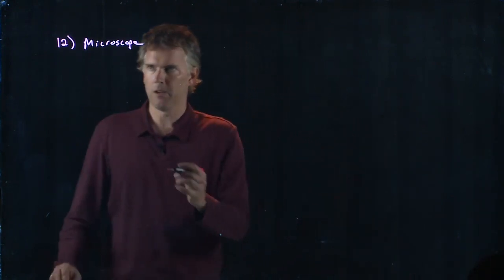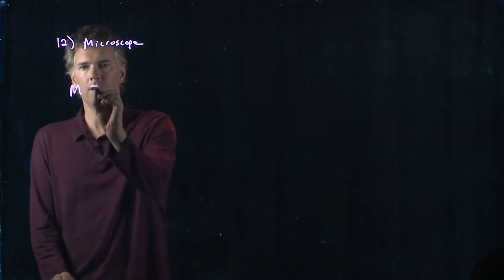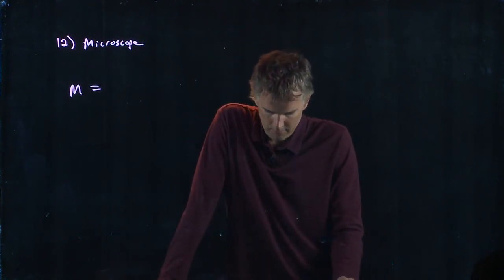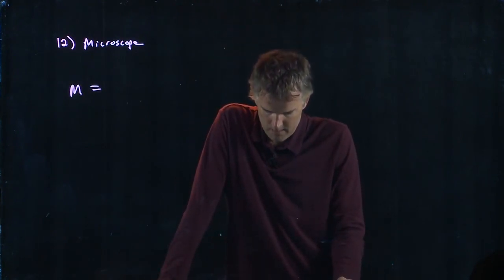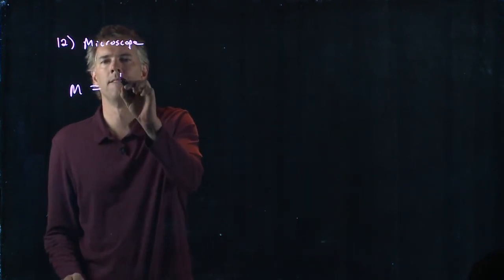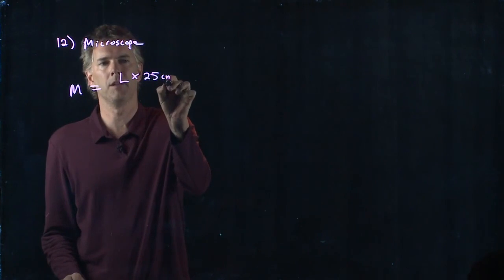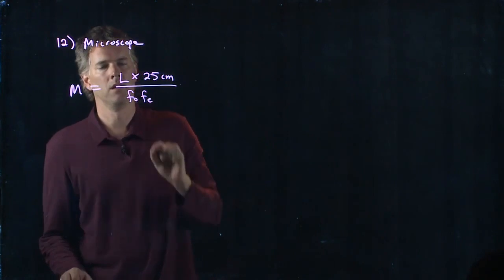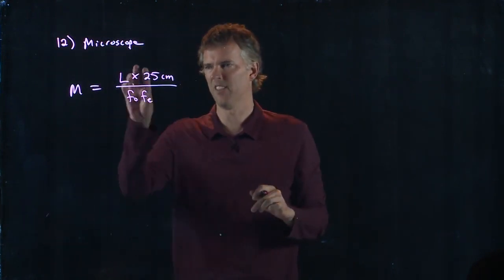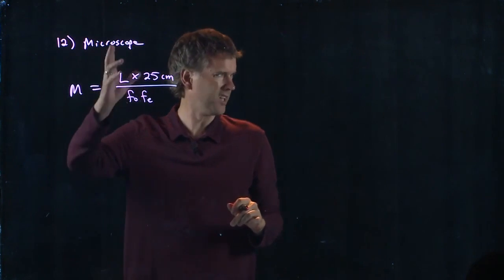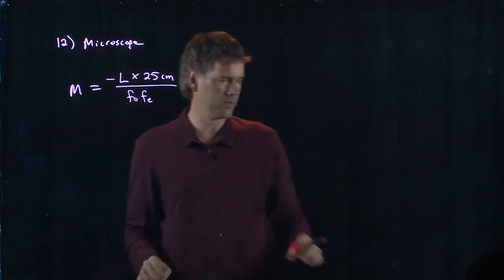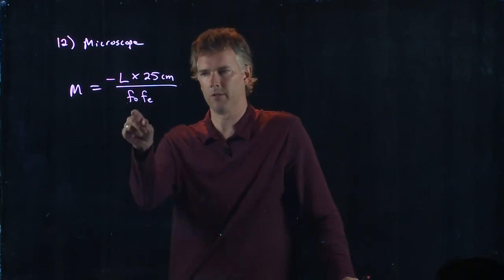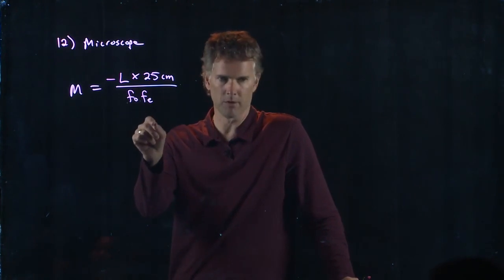Magnification of a microscope. Anybody remember what we came up with for that? It's okay if you didn't. L times 25 centimeters. That's right. And I think maybe there's a minus sign to say it's inverted, right? But we don't really care about whether the image is inverted or not. So it's L times 25 centimeters over the focal length of the objective times the focal length of the eyepiece.